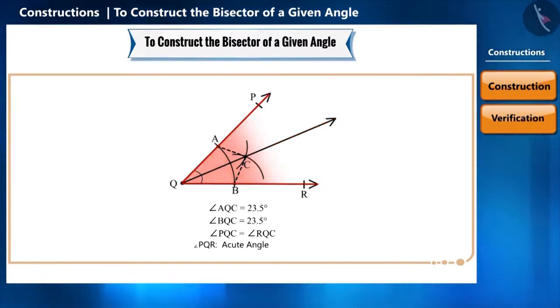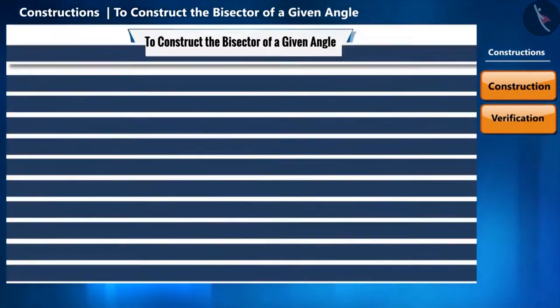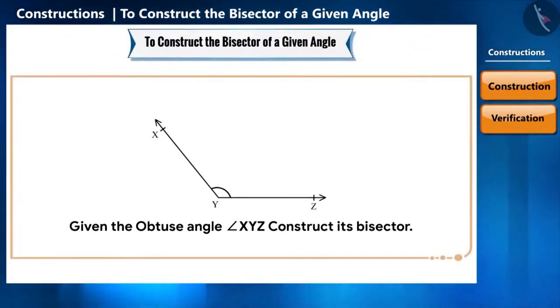Friends, with this, we have learned to construct the bisector of an acute angle. Construct the bisector of the given obtuse angle yourself and also mathematically prove the construction.